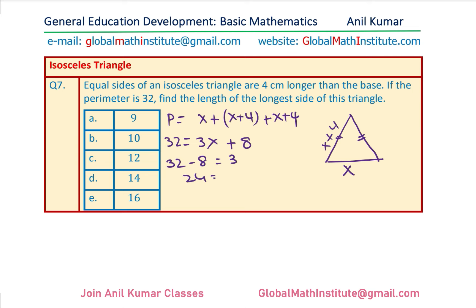Solving, X = 24 ÷ 3 = 8. The longest side is X + 4 = 8 + 4 = 12. So the answer is 12 centimeters.